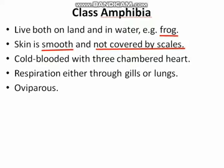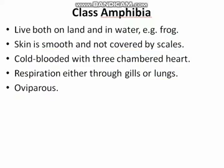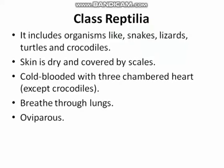Amphibians are also cold-blooded organisms, meaning their internal body temperature depends on the external temperature of their environment. Their heart is three-chambered, as compared to the two-chambered heart of Pisces. Their respiration is either through gills or lungs, and these are also oviparous organisms.